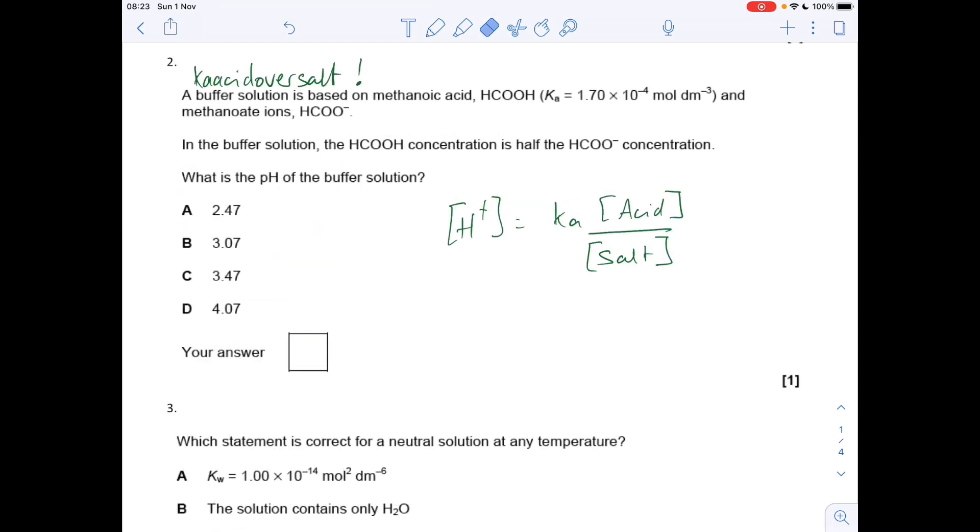Question two is about a buffer solution. I tell my students whenever you see the word buffer solution, think the word acid over salt. It's just my silly way of remembering the formula to calculate the H+ of a buffer solution. So it's the Ka, the acid dissociation constant of the weak acid in the buffer, multiplied by the concentration of the acid divided by the salt concentration. Sometimes as a teacher I see students getting them the wrong way around, so Ka acid over salt gets the acid on the top and salt on the bottom.